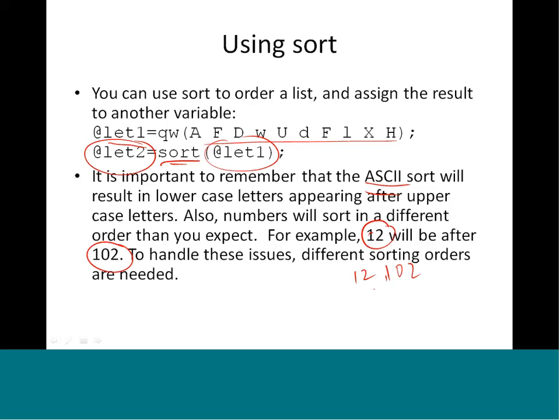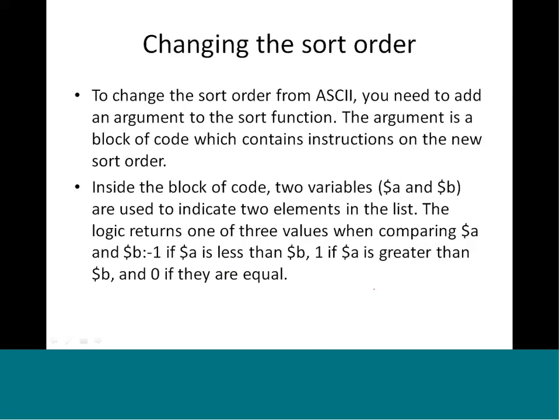So if you want a real numeric sort - for example, where 12 comes before 102 - you need a different sorting order. For that we need to use separate parameters. We saw this briefly in the previous lecture, so here I am going to elaborate a bit more on how to change the sort order.